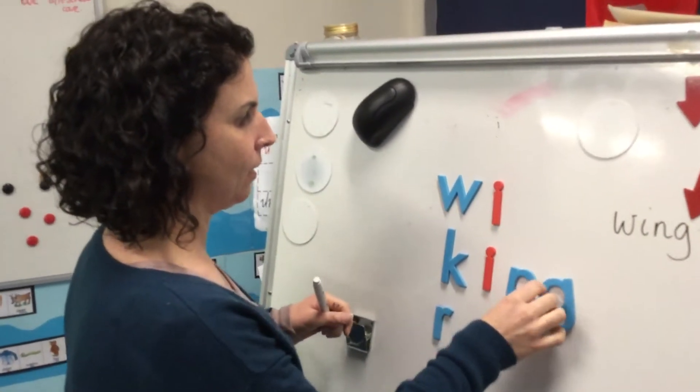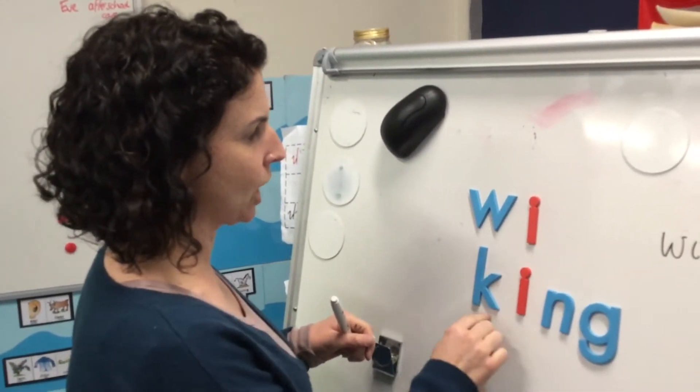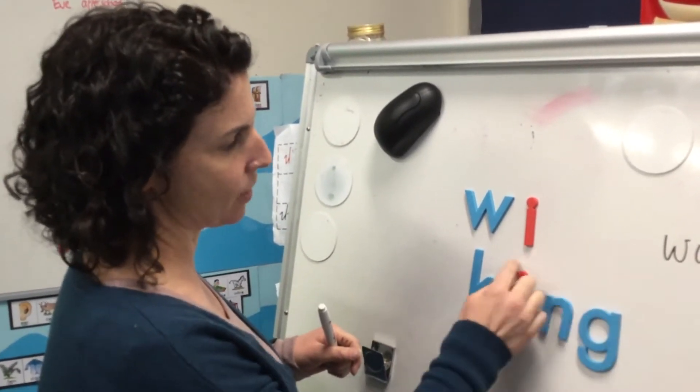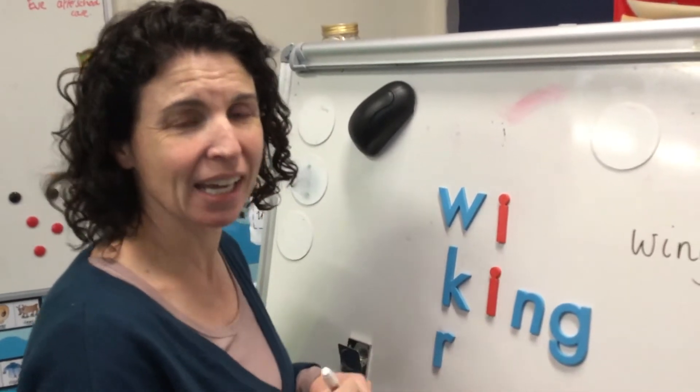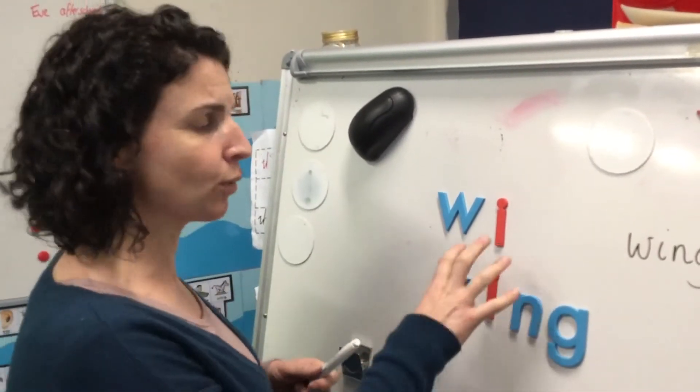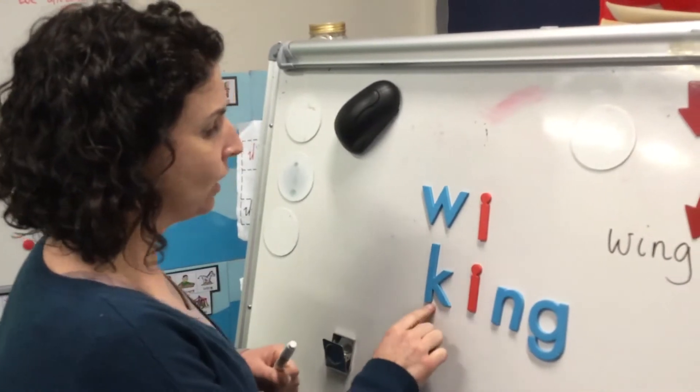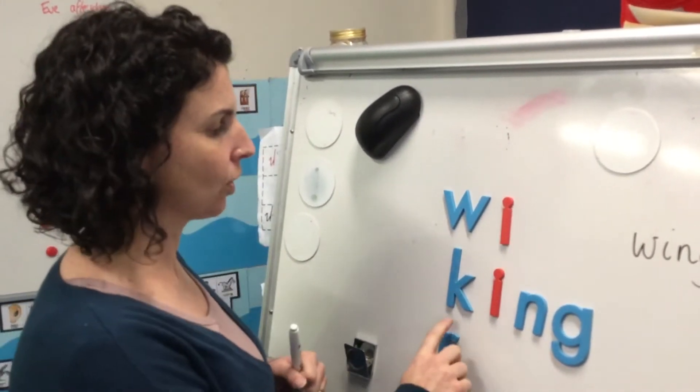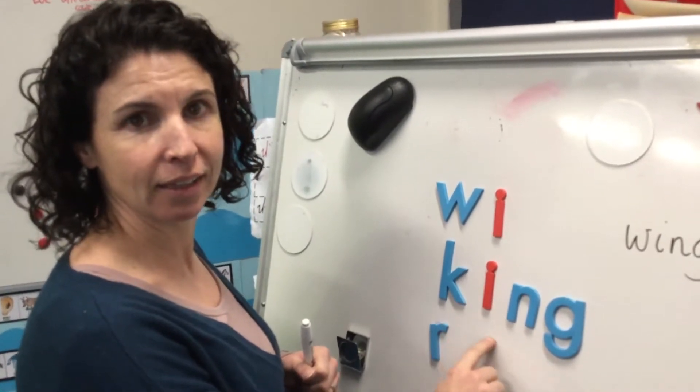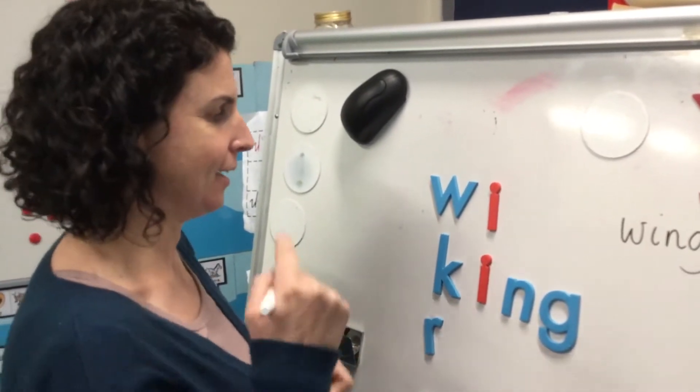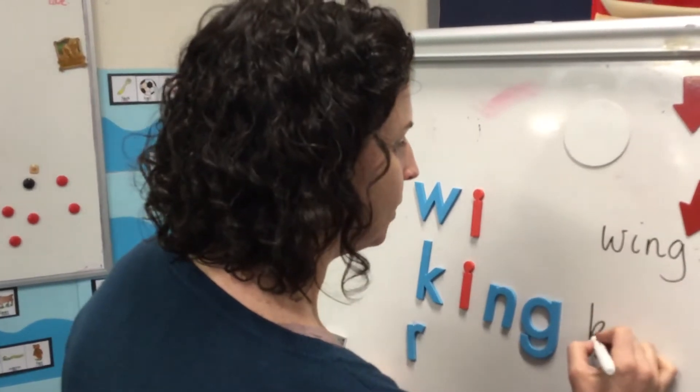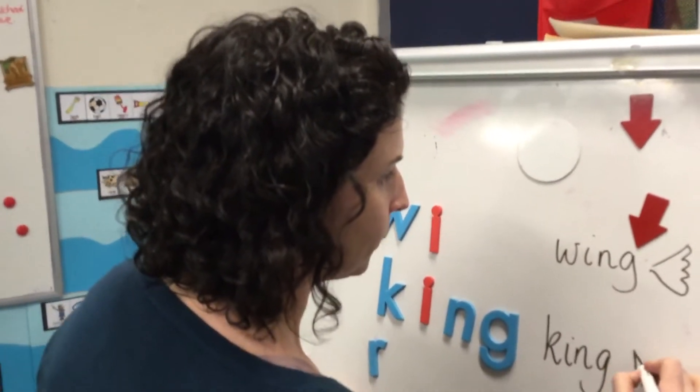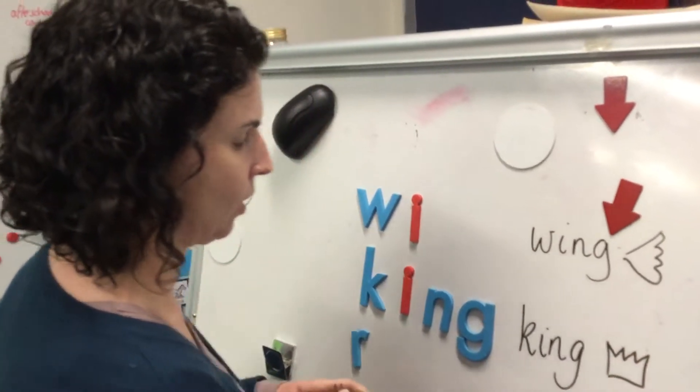Now moving down, the only sound that will change is the first sound. So we've got the ING here still. We worked that out just before, so we don't need to work it out again. That's what good readers do. Once they've worked out some sounds, they can just use them. But we do need to change the first sound. We need to use a K making a K sound. So KING. KING. It's the word KING. I'll draw a crown. There we go.